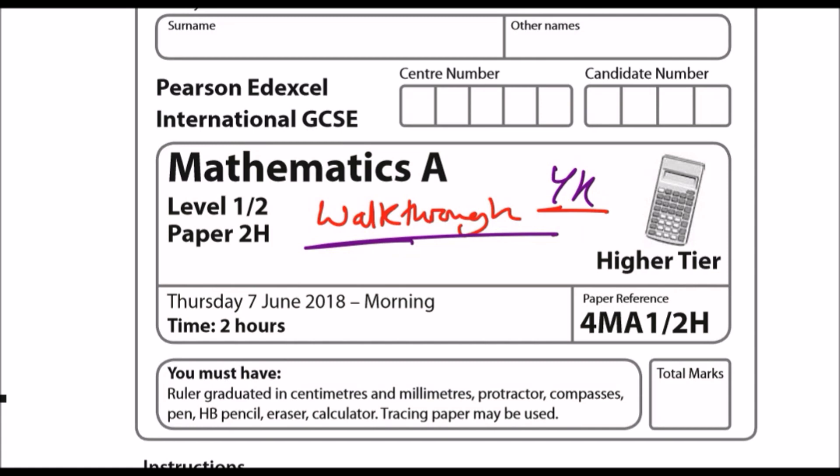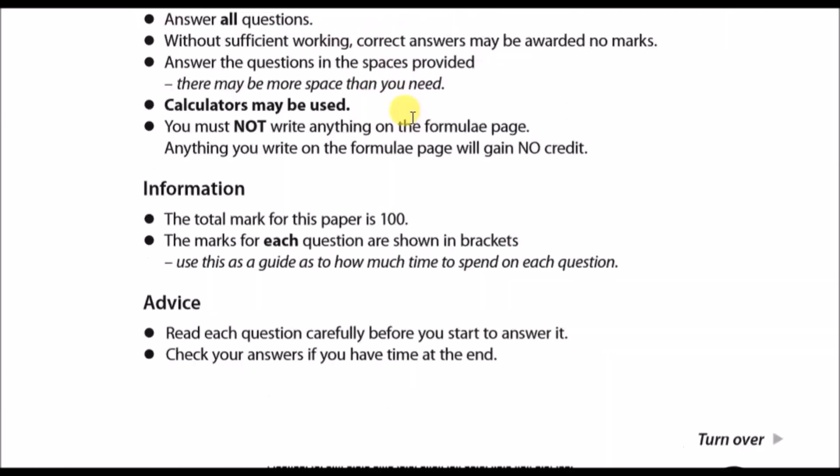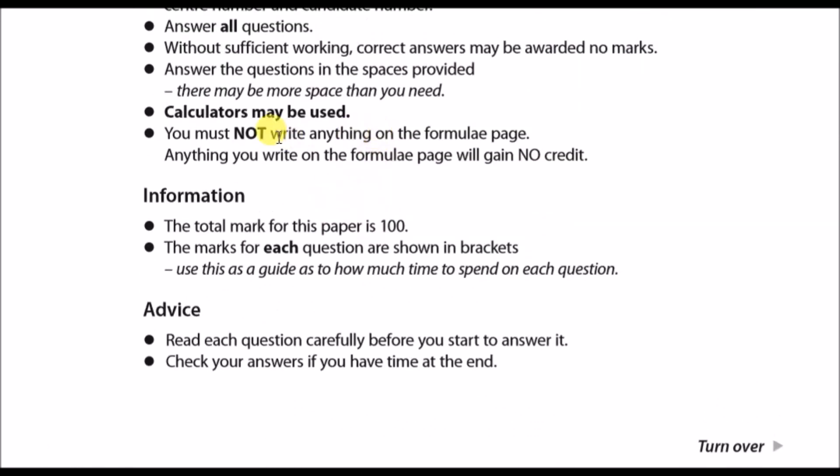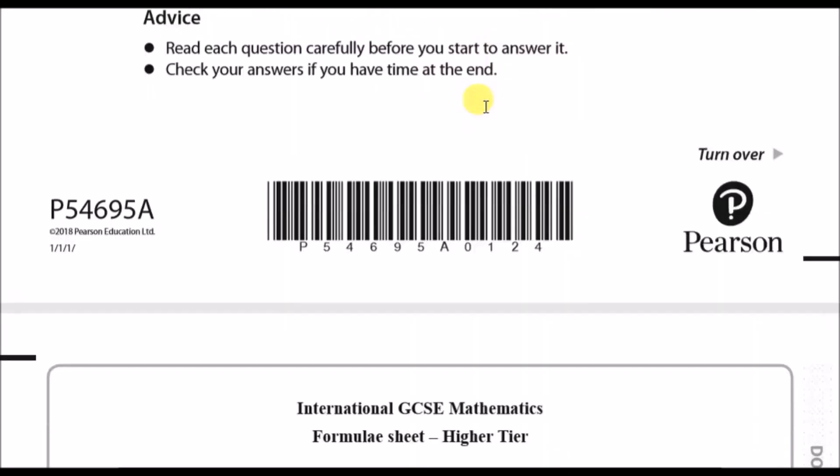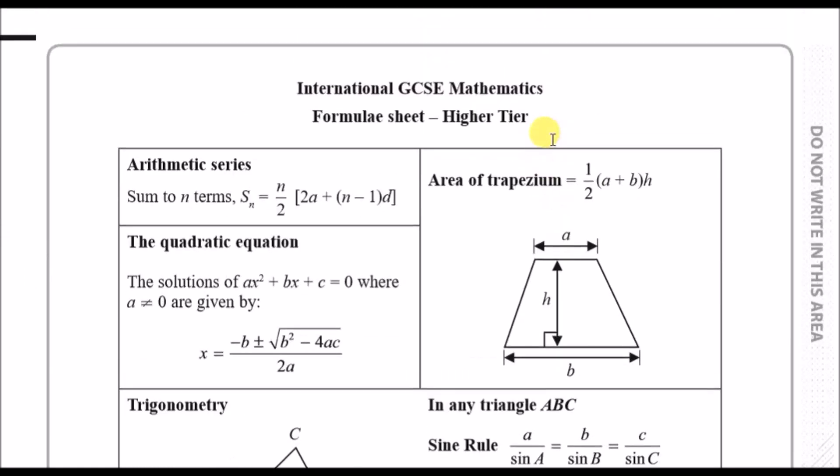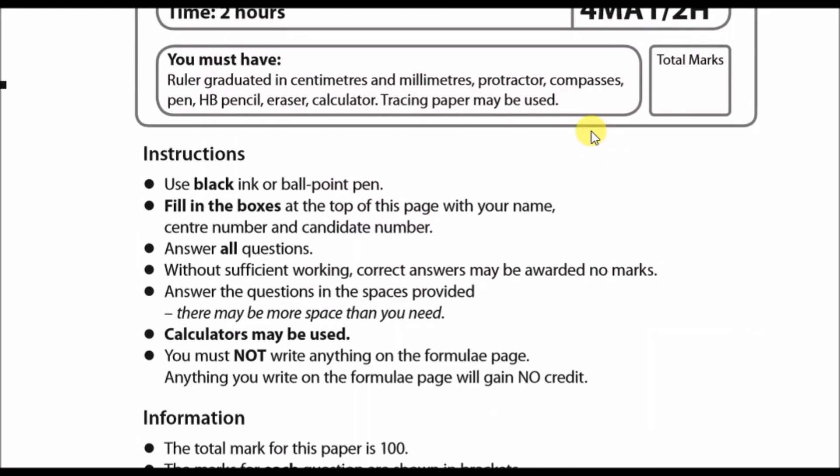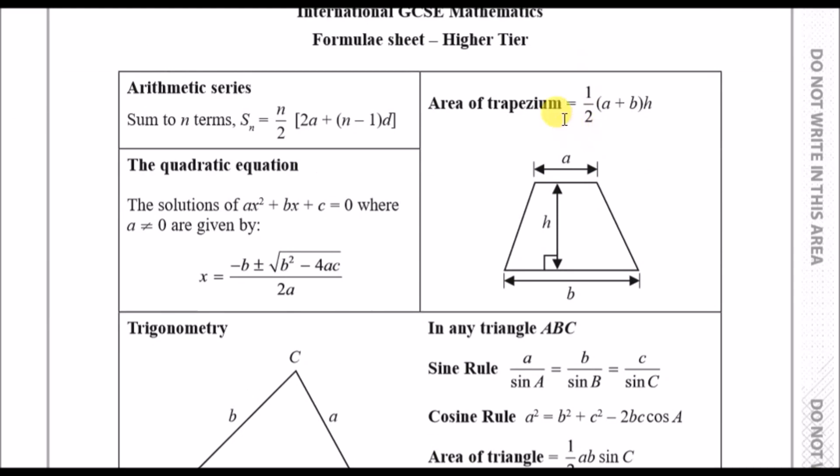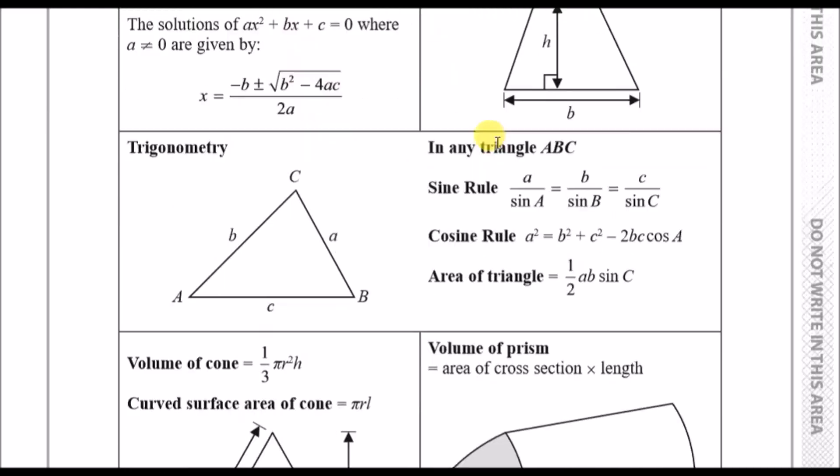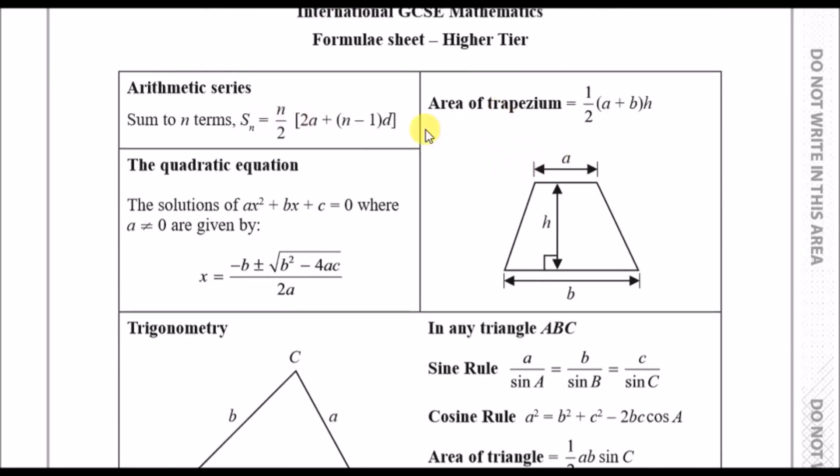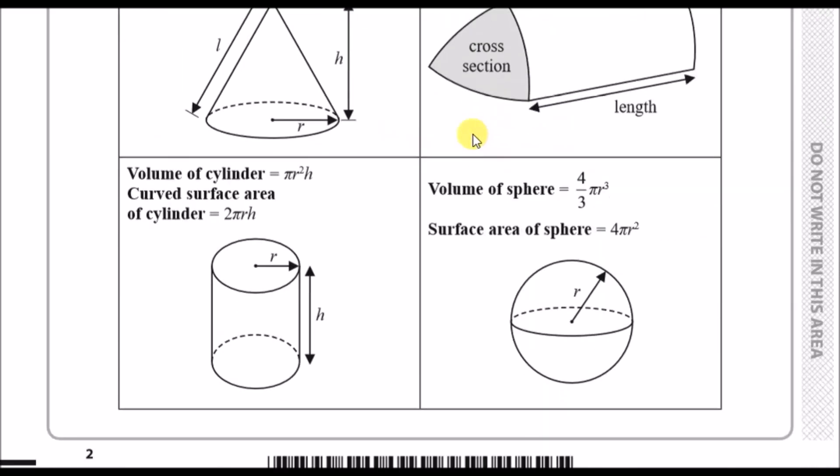All right guys, as promised here is the paper 2-H walkthrough of the June 2018 series under Edexcel. I'm just gonna go straight into it. As always, make sure you use a black pen when you enter the exam and you can use calculators. The formula sheet is always on the first page—literally open the booklet and it's there. It's better to make a note of what formulas are not in the list so you can try and memorize them.